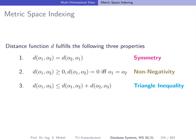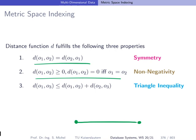It's important for understanding how query processing works. We're not only talking about the distance function, but this distance function has to fulfill the metric space property — that is, the property of being a metric. We require the distance function to be symmetric. The second criterion is called non-negativity. And the third criterion, which is important, is called the triangle inequality, which you probably already know. The direct distance between two points is smaller or equal than the distance via a third point.